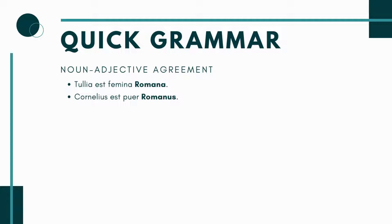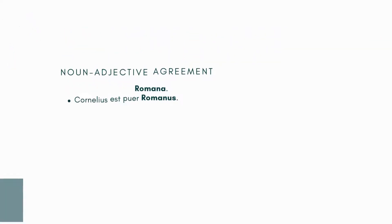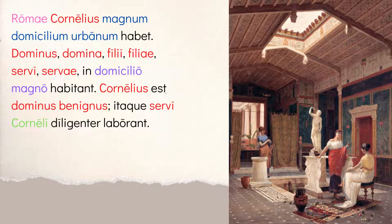Chapter 15 starts: Romai Cornelius magnum domicilium urbanum habet. Romai means 'in Rome' or 'at Rome.' Cornelius is the subject, habet is the verb — 'he has.' What does he have? A magnum domicilium urbanum — a big urban house. The noun is domicilium, and it's matched by two adjectives: magnum and urbanum. Notice they all use the UM ending — that's noun-adjective agreement. They all match the case, number, and gender of domicilium, which is neuter accusative singular.